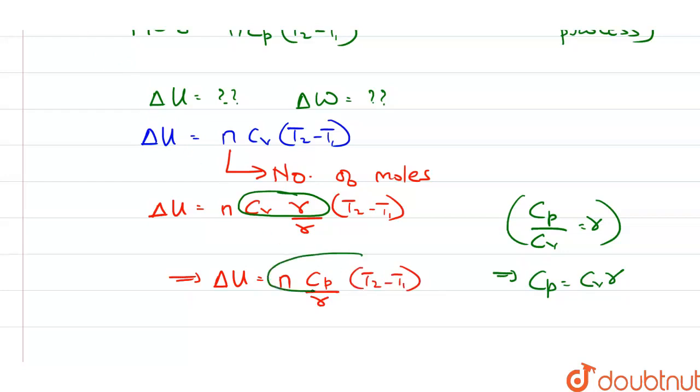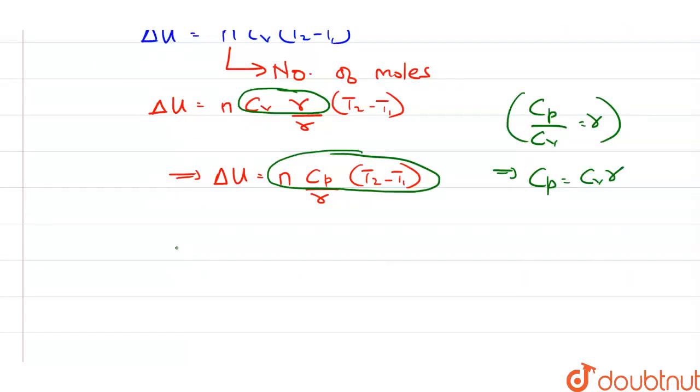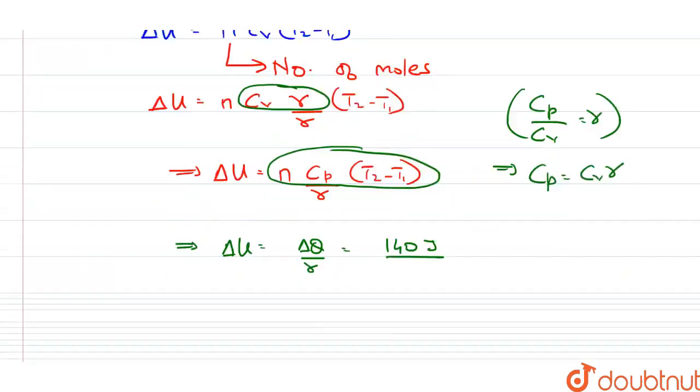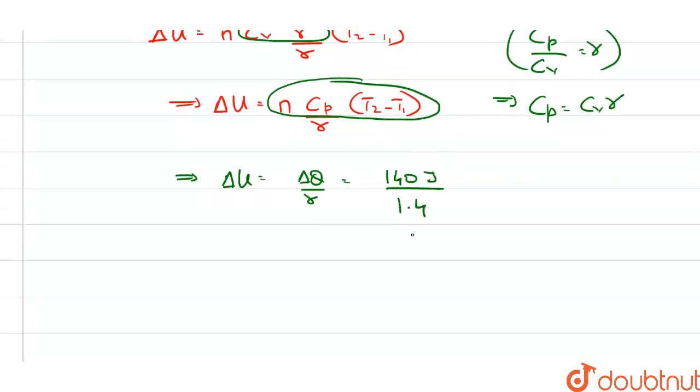Now this entire term is similar to the delta Q formula. Therefore, we can put the value of delta Q in delta U. So delta Q upon gamma: delta Q was given to us as 140 joules divided by gamma given as 1.4. This implies delta U, or the change in internal energy, is equal to 100 joules. This is the change in internal energy.